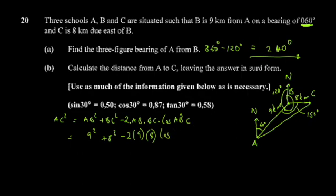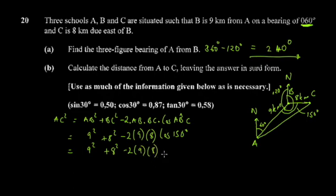The interesting thing is that cos(150°) is not written directly. cos(150°) is actually equal to negative cos(30°). This uses the identity for angles greater than 90 degrees.